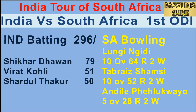Fifth ball of the second over, Jensen to Dhawan — tight line on, takes the inside edge. Lucky for Dhawan, it's gone past the legs for four runs. Third ball of the fourth over, Jensen to Dhawan again — Dhawan comes forward on the front foot and punches it nicely to the fence for four.